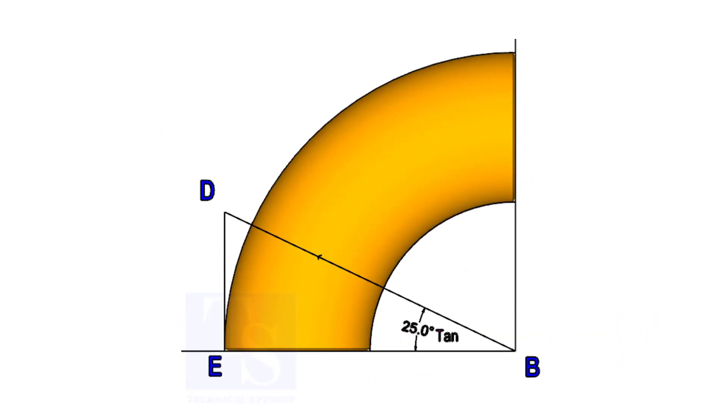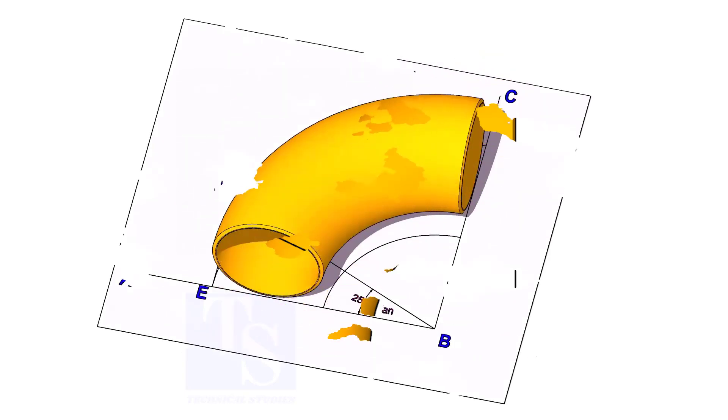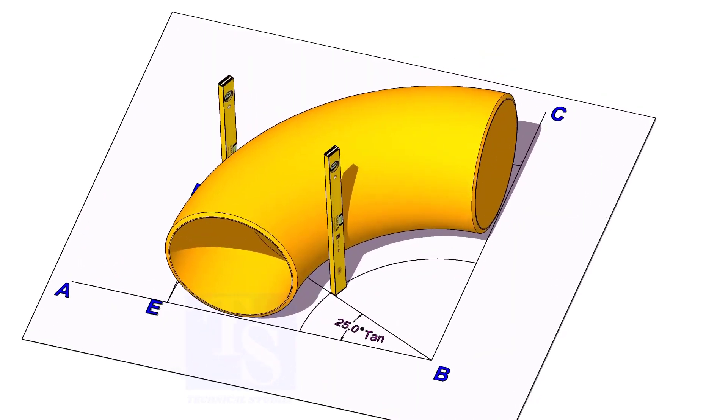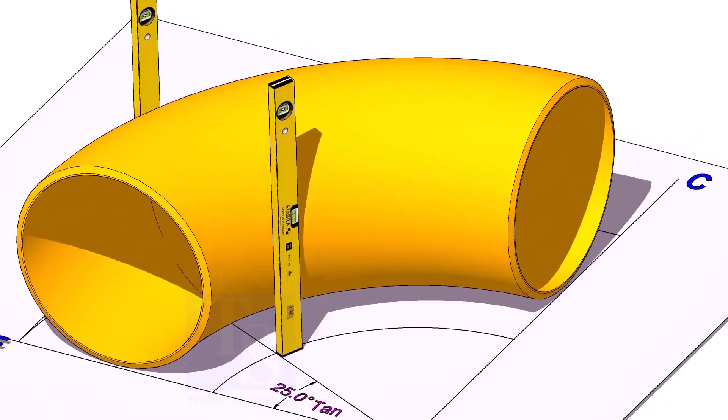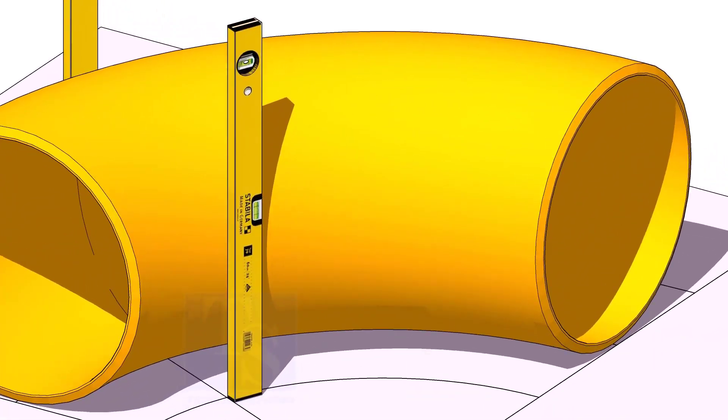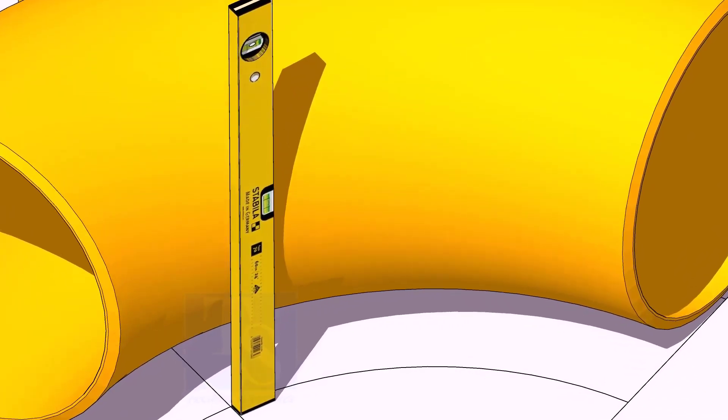Now, put the elbow exactly on the layout as shown. Hold two large level bottles at the edge of the elbow on both sides vertically, and strike a mark where the level bottle edge touches the elbow.